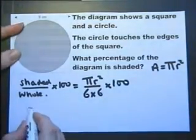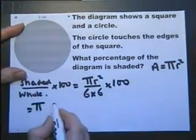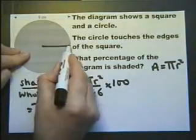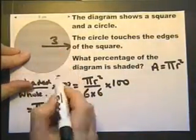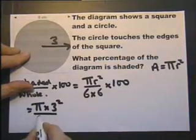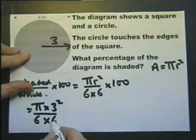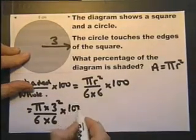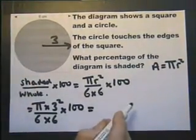So, the area of the circle is pi r squared. If the distance across there is 6, the radius itself must be 3. So that's the area of the circle. That's the area of the whole square. That's the fraction that's shaded. Multiply that by 100, and you'll have the percentage that's shaded.